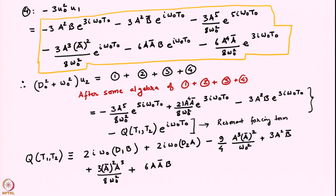Because the coefficient of this term is lengthy, we have written it as q, some function of t1 and t2, where q is given by this expression. You can show all of this by putting together all four terms — 1, 2, 3, 4 — adding them up and doing a little algebra. We are interested in this resonant forcing term only because this is a solution to the homogeneous equation. So we have to set the coefficient to zero, or in other words, we have to set q to zero.